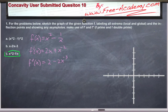In this video presented by www.free-academy.com, we're going to be doing the third and final part of our user-submitted question on concavity. This question gives us f of x equals x squared minus 1 over x, and asks us to find the asymptotes and the intervals it's increasing, decreasing, the extrema, local and globally, and the inflection points.